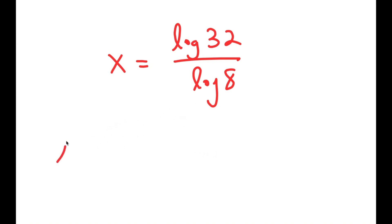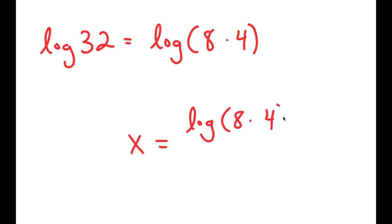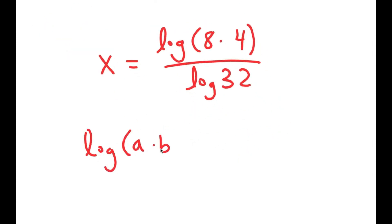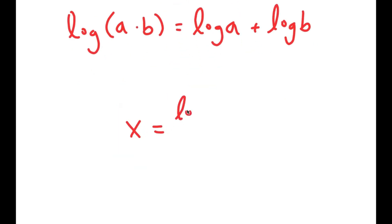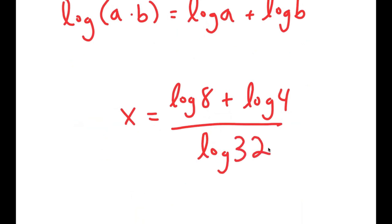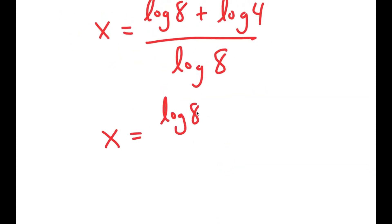Now, log of 32 is the same thing as log of 8 times 4. So I get log of 8 times 4 over log of 8. And if I have something in the form log of a times b, this is equal to log a plus log b. So in this case, this is going to equal log of 8 plus log of 4, all over log of 8.